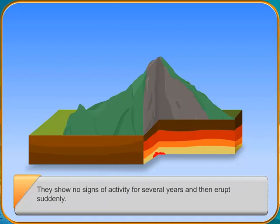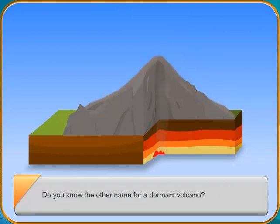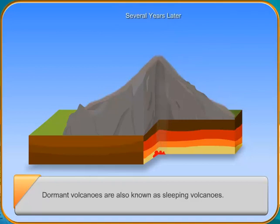Volcanic cones that have not been known to erupt since historical times are known as extinct volcanoes. There is almost no movement inside such structures.